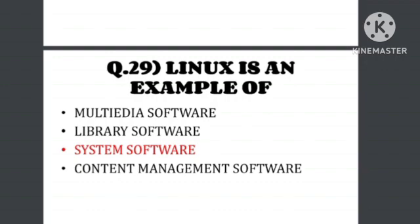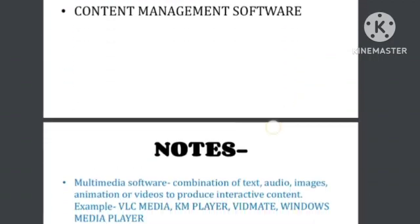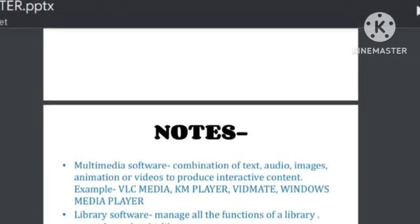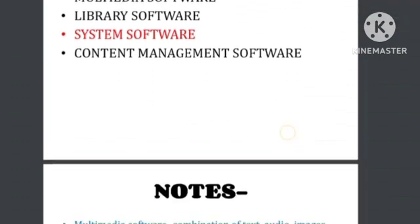Question number 29: Linux is an example of which type of software? Linux is an example of system software. The options given include multimedia software, library software, and content management software.